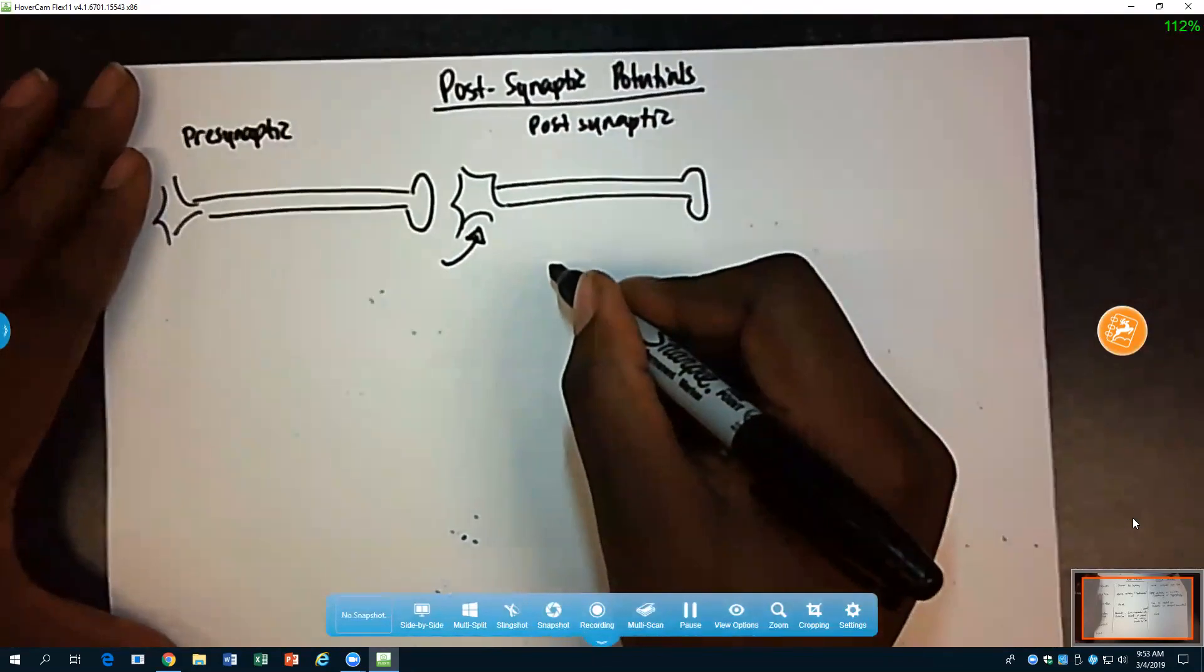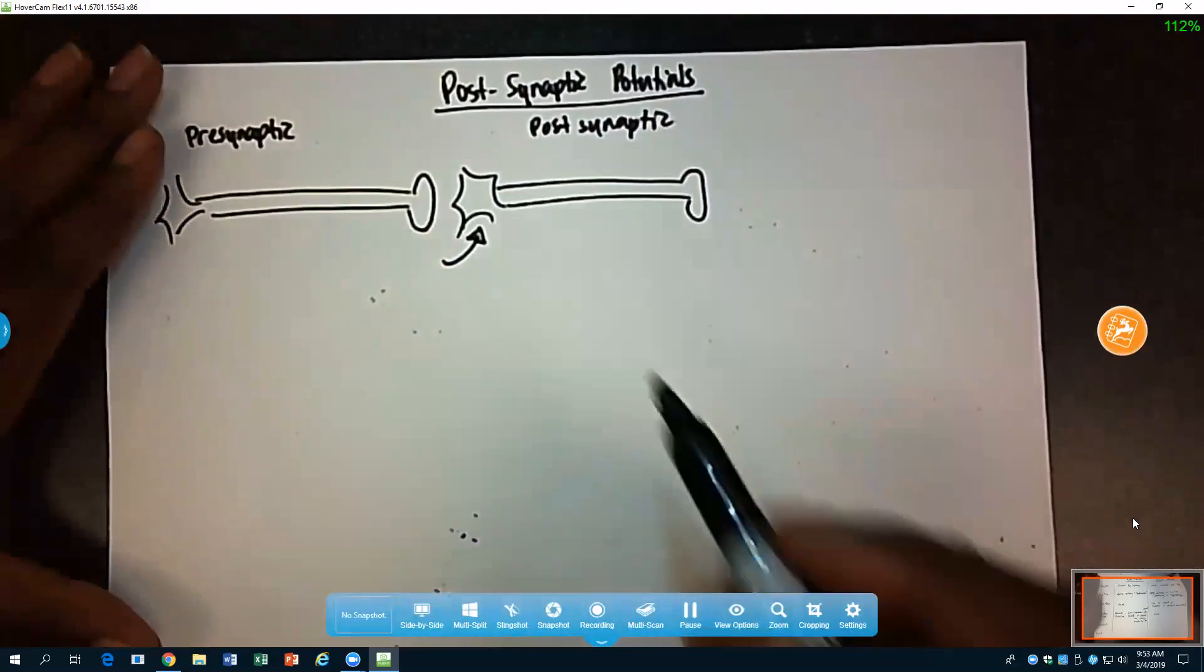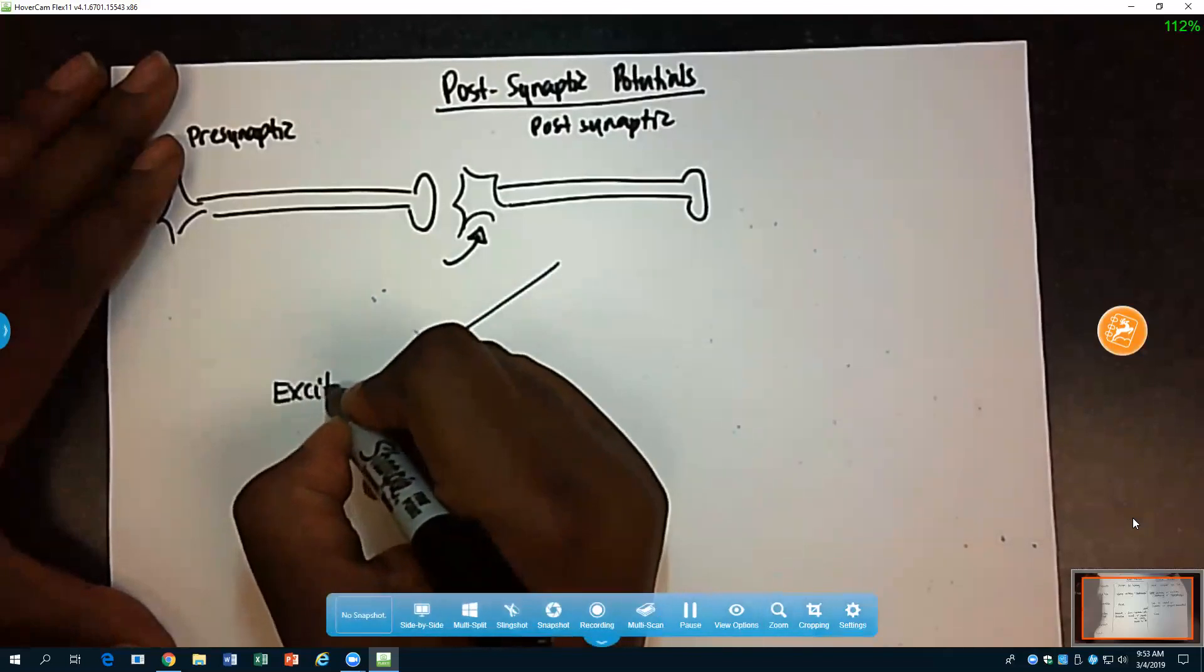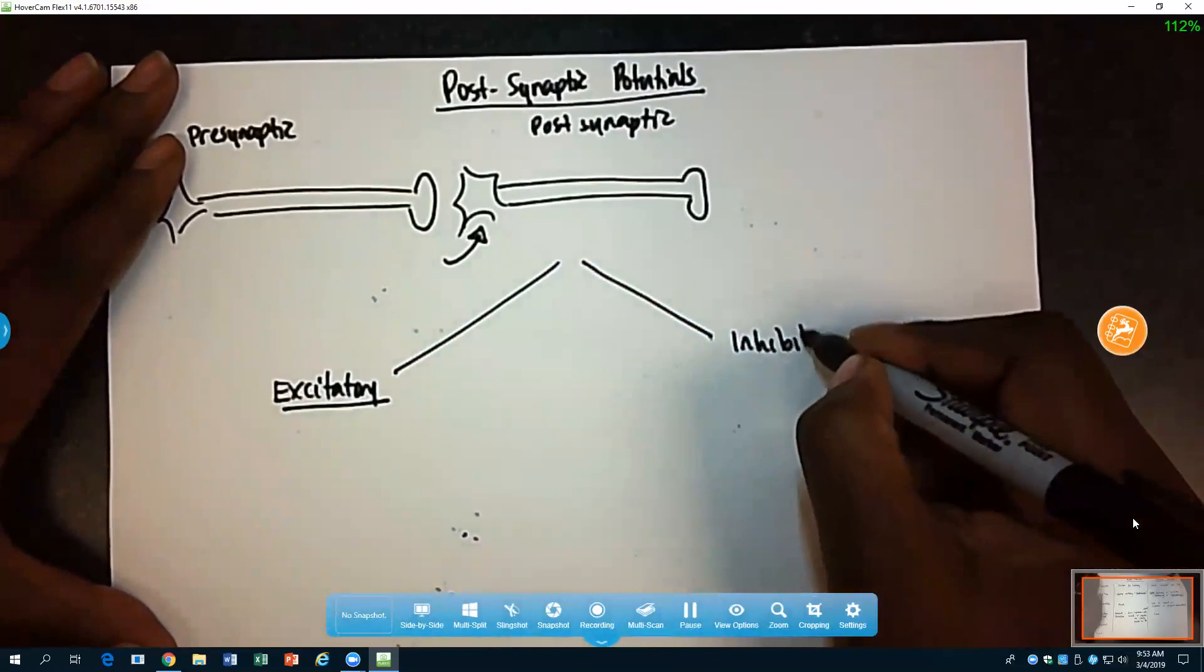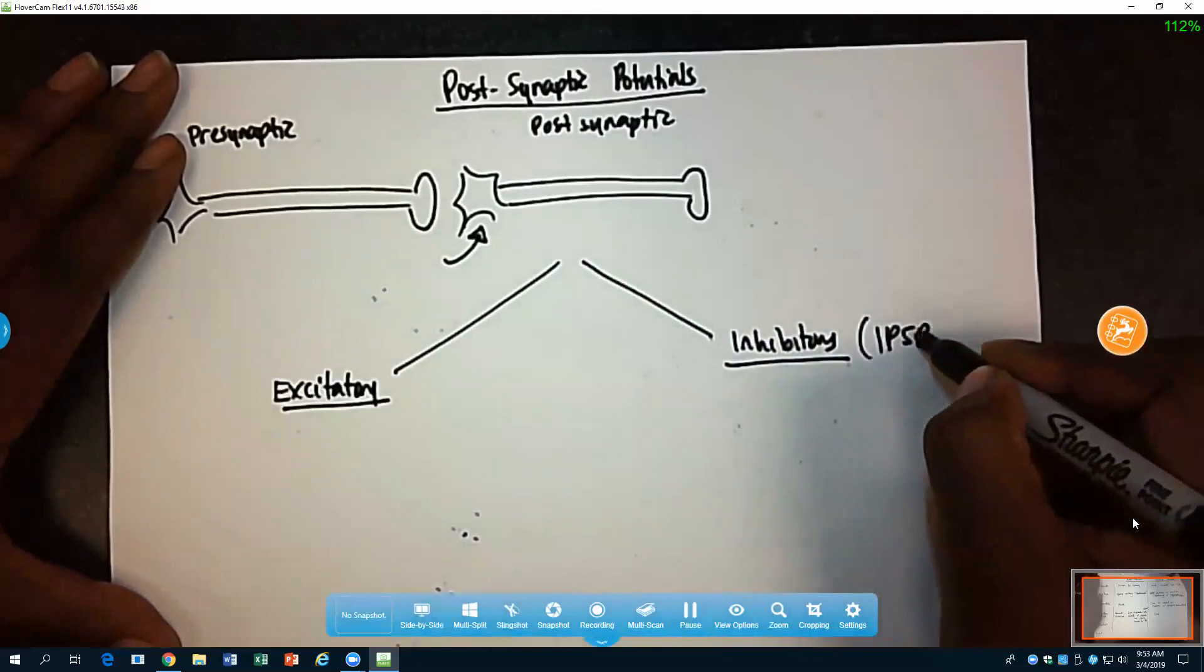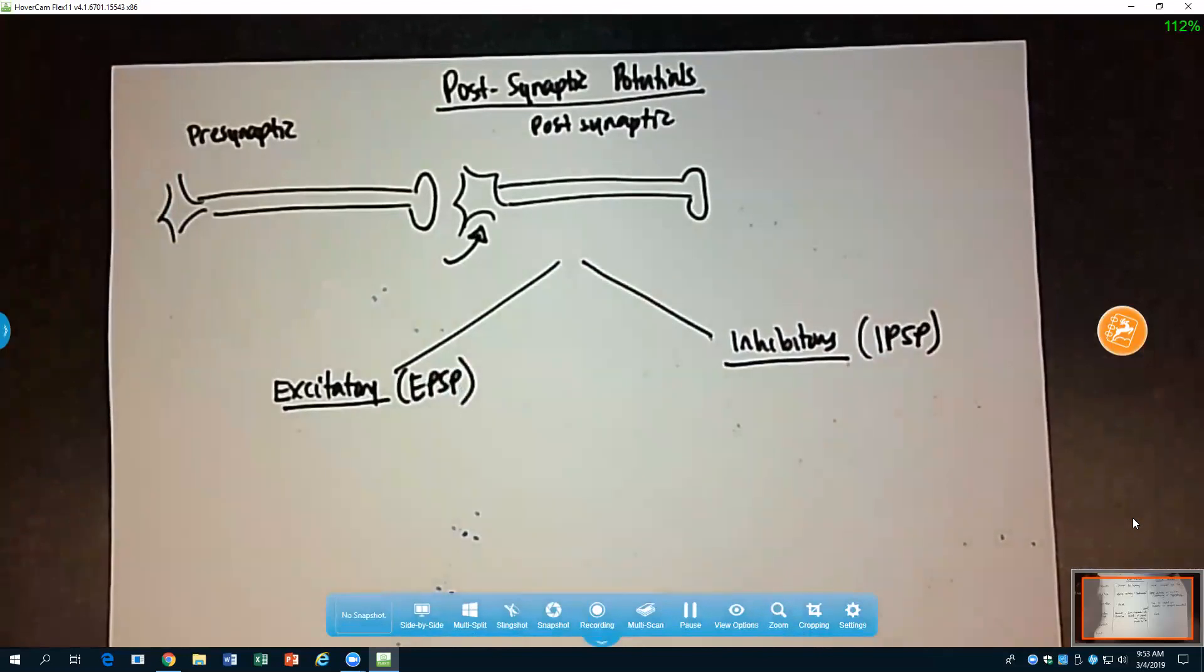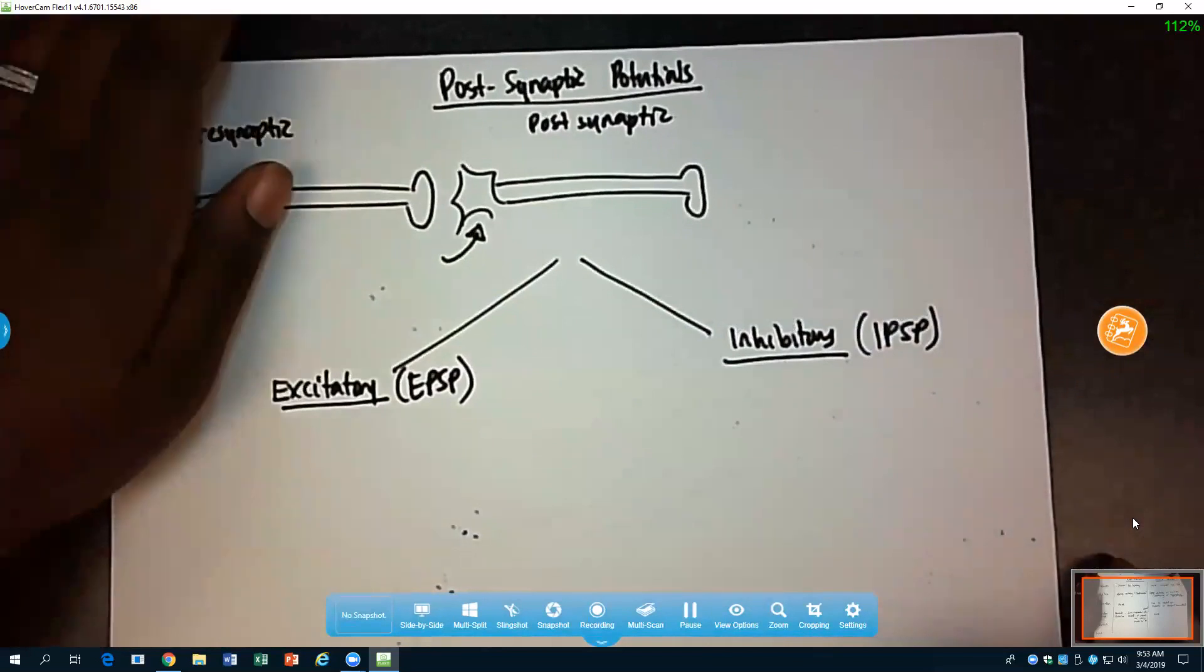So depending on the direction of the change in the membrane potential, these could either be excitatory or inhibitory. IPSP, EPSP. So depending on the direction of change, whether or not it was depolarizing or hyperpolarizing, we would have an excitatory or an inhibitory post-synaptic potential.